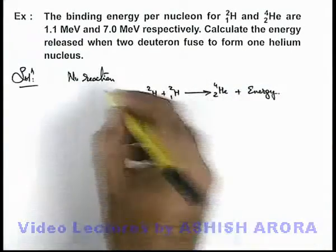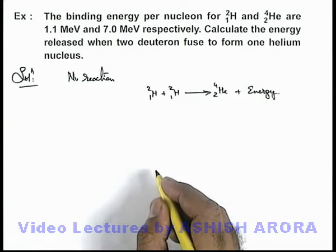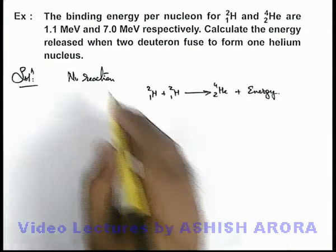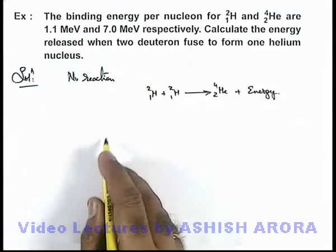You can recall in the previous example we have used the same reaction, but that time we calculated the energy by using mass defect. In this situation we are given the binding energy.